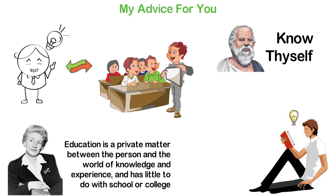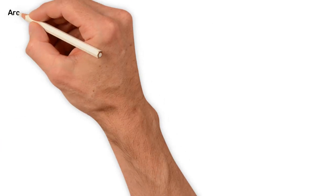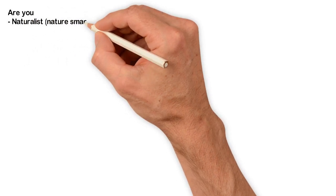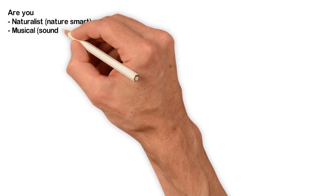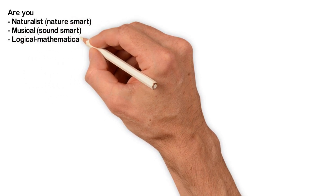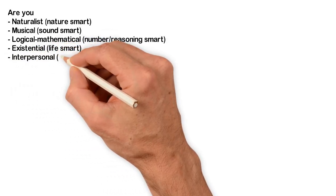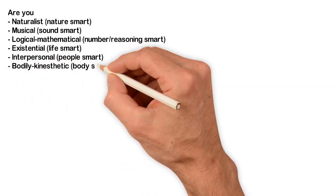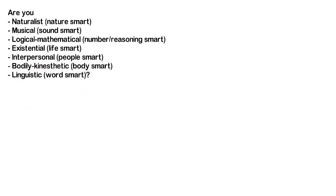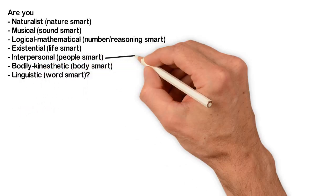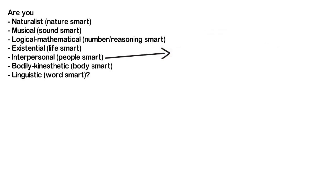Know who you are, what your strengths are, what your weaknesses are, what you do easily even though others find them difficult. You have to know how your brain works, what your temperaments are, what kind of intelligence do you have much of. Are you naturalist, nature smart? Musical, sound smart? Logical mathematical, number or reasoning smart? Existential, life smart? Interpersonal, people smart? Bodily kinesthetic, body smart? Linguistic, word smart?